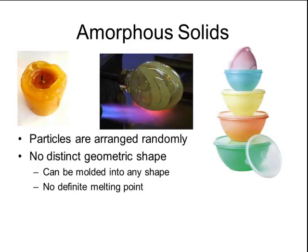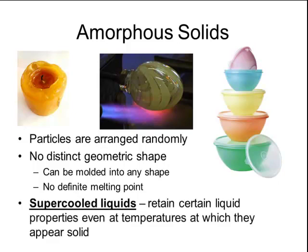People that participate in the art of blowing glass take advantage of this when forming their products. Amorphous solids are sometimes classified as supercooled liquids, because they retain certain liquid properties even at temperatures where they appear to be a solid. The reason they retain these liquid properties is because the particles are arranged randomly, much like the particles of a liquid. But unlike a liquid, the particles of an amorphous solid are not constantly changing their positions.